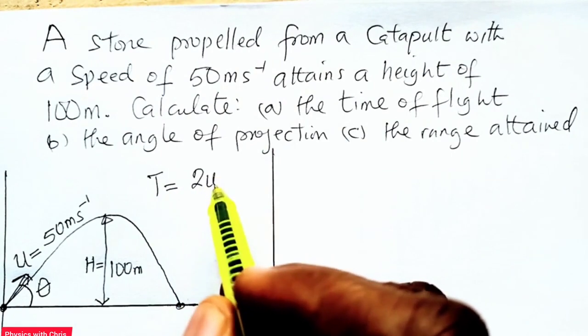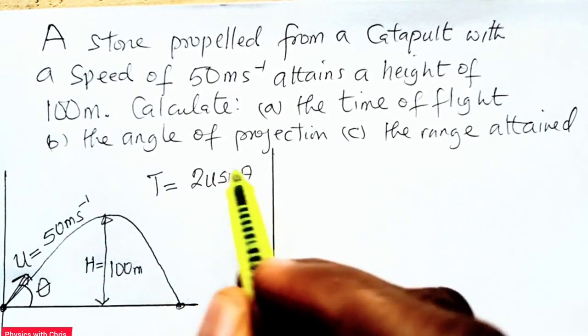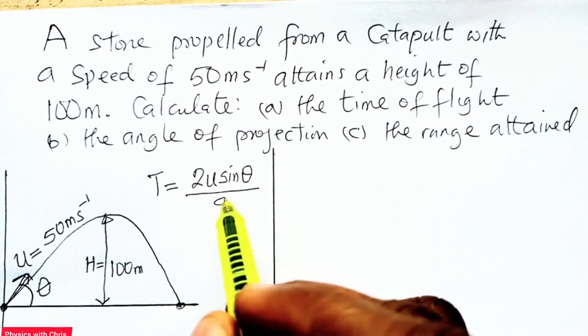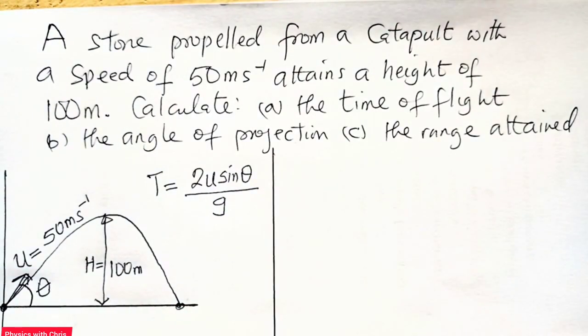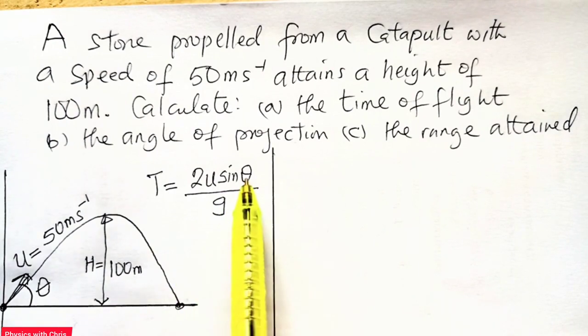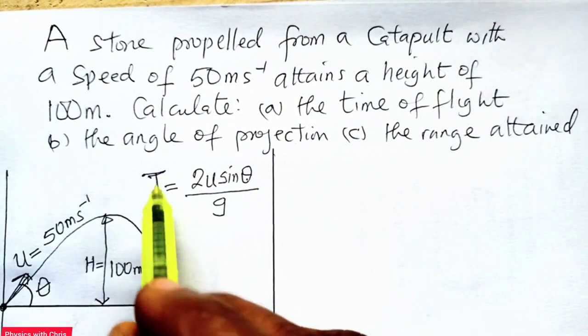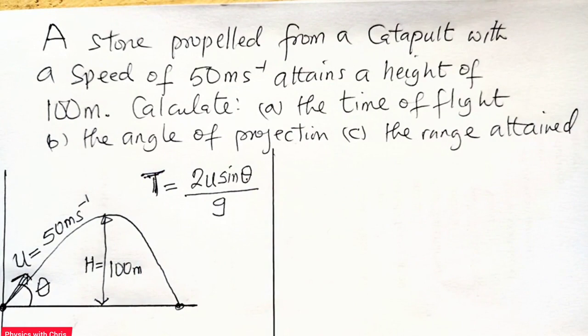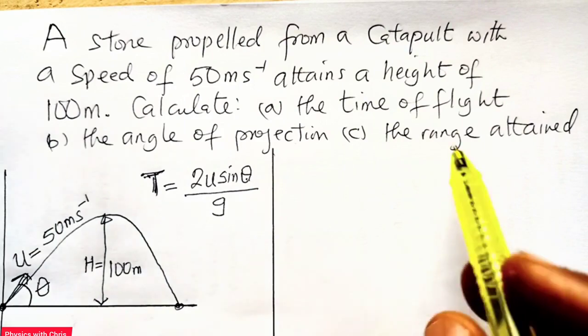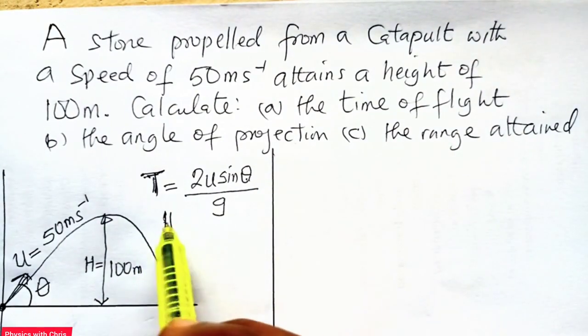And I will refer to that video: 2U sine theta divided by g. That's the equation for calculating the time of flight. Therefore, by careful inspection, we see that we need the value of angle theta to be able to calculate the time of flight, and that is not given. We are also to calculate the angle of projection. We need theta to be able to calculate the time of flight. And the maximum height is also given, that is 100 meters.